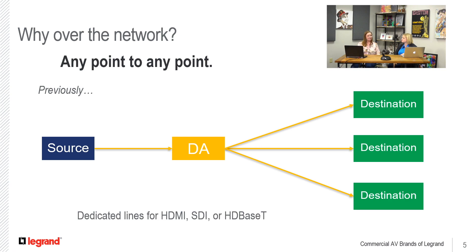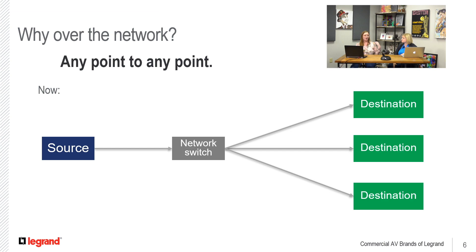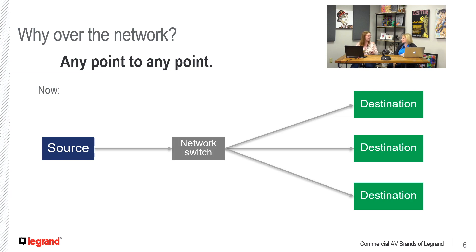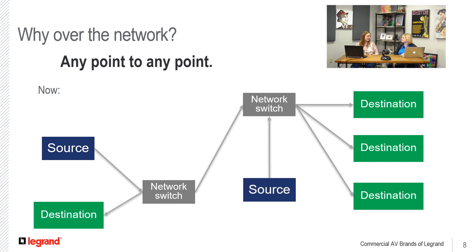The cool thing about AV over IP, where a lot of stuff is heading, is that instead you just replace that distribution amplifier with a network switch. Now any source can go to any destination within that ecosystem on that network switch. You can jump between different network switch points to get to a longer destination without adding a whole bunch of extra AV equipment point to point. Any source can go to any destination — super easy. You don't have to run dedicated AV wiring anymore; you just need a solid network to get you wherever you need to go.